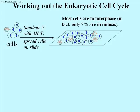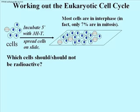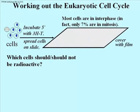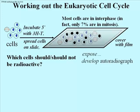We can spread these cells on a glass slide and look at them in the microscope. You can really see that very few cells are in mitosis — actually showing a mitotic figure, meaning a mitotic spindle. About 7% of any given cell population duplicating every 20 hours are going to be in mitosis; the rest are in interphase. Which of these radioactive cells should or should not be radioactive? We can find out by laying a piece of film over the slide and allowing time for the radioactive thymidine incorporated into DNA to expose the film. We can then develop the autoradiograph.